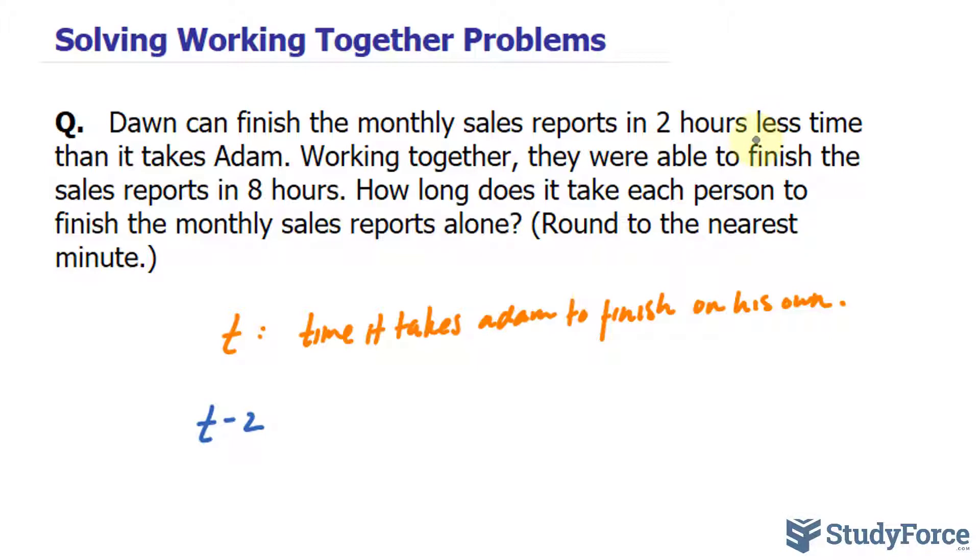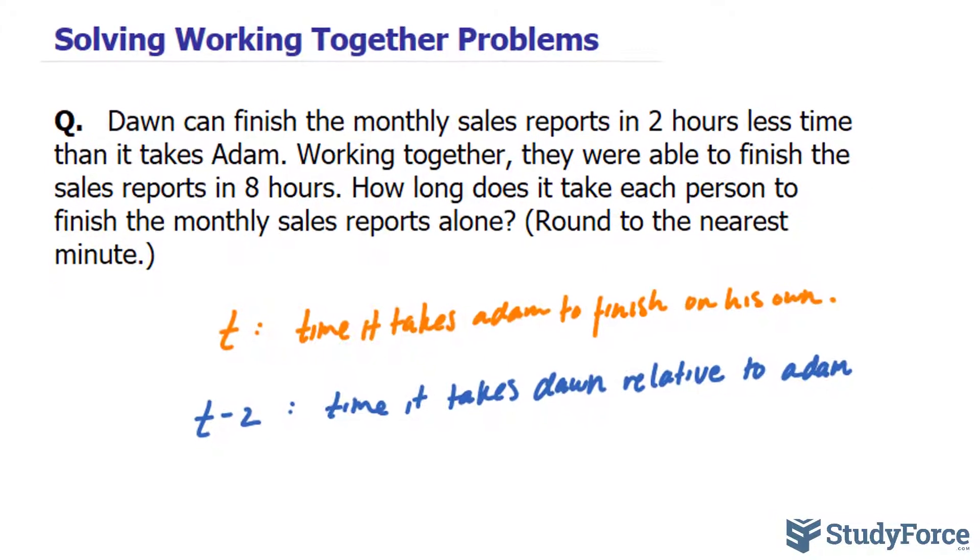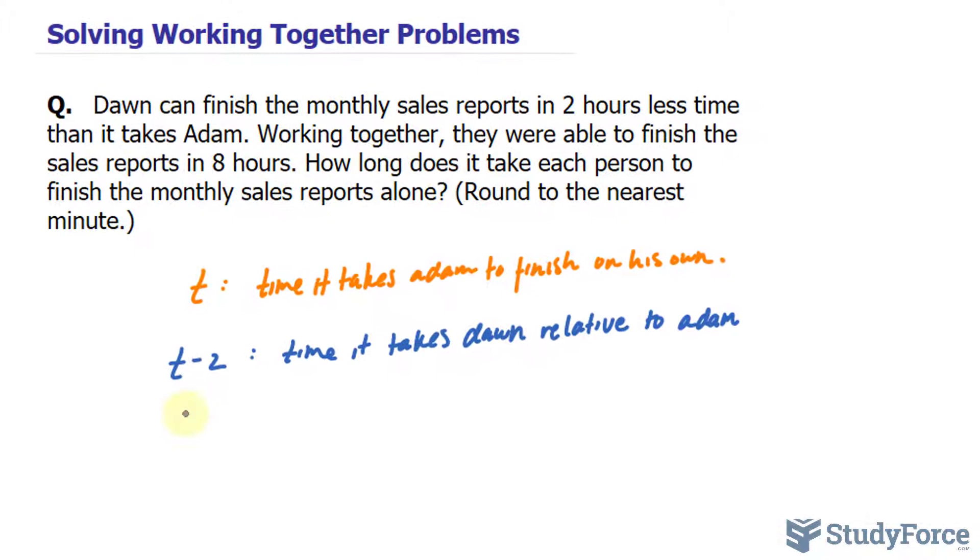So the rate that it takes Adam to finish a sales report, let's call the number of sales reports r. So the rate for Adam is r over t.